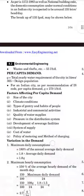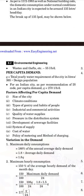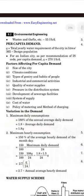The next heading is per capita demand, denoted by Q, which equals total yearly water requirement of the city in liters divided by 365 × design population. For an Indian city, as per IS code recommendation, per capita demand Q equals 200 liters per head per day. The factors affecting per capita demand are: size of the city, climate conditions, types of gentry and habits of people, industrial and commercial activities, quality of water supply, pressure in the distribution system, development of sewerage facilities, system of supply, cost of water, and policy of metering and method of charging.